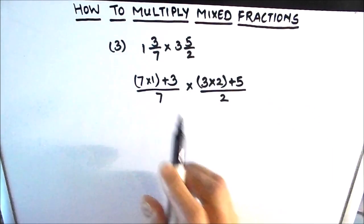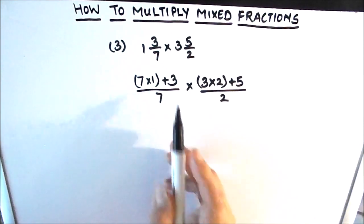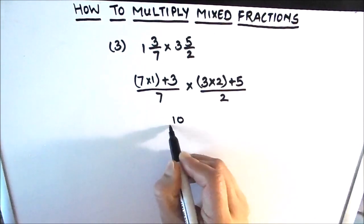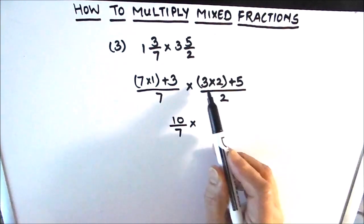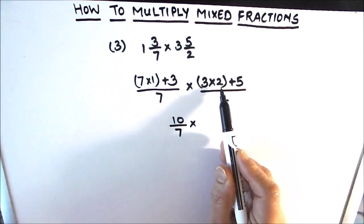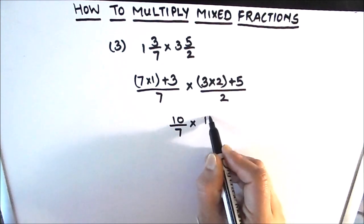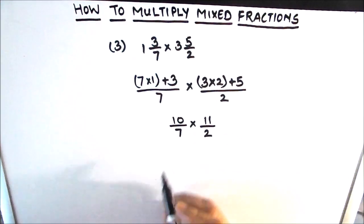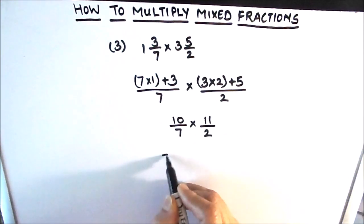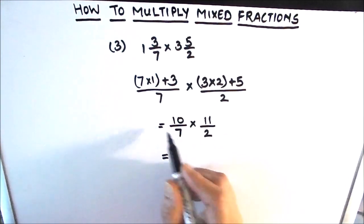7 times 1 is 7, and 7 plus 3 is 10, giving us 10 upon 7. Then 3 times 2 is 6, and 6 plus 5 is 11, giving us 11 upon 2. Now we have two improper fractions to multiply.